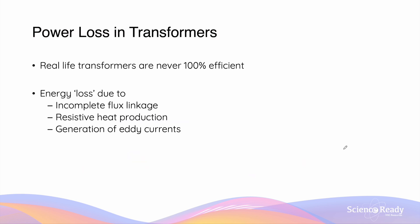There are a few reasons why transformers are never 100% efficient. The energy losses that cause transformers to have less than 100% efficiency include: incomplete flux linkage, resistive heat production, and the generation of eddy currents in the iron core. We'll discuss each reason individually.